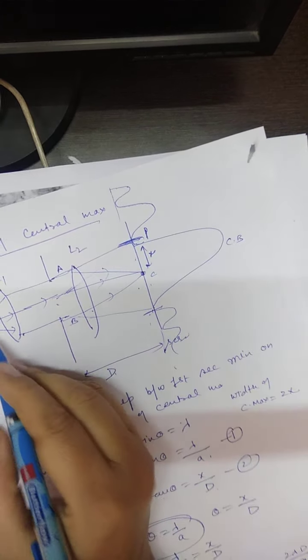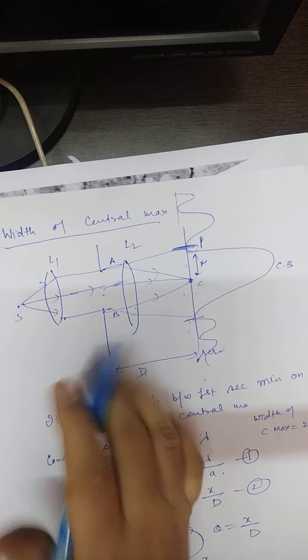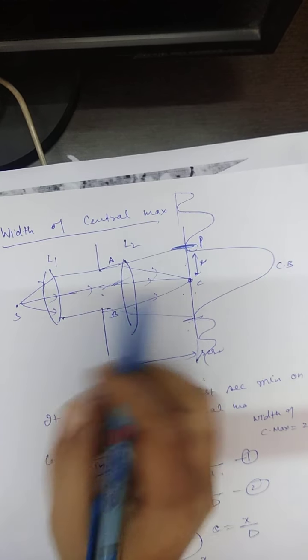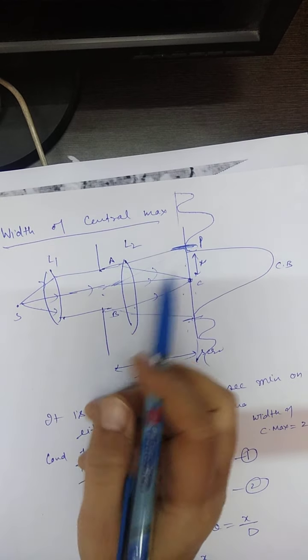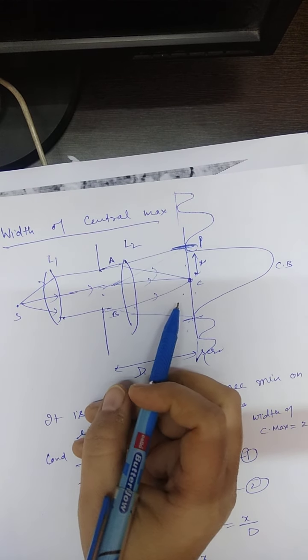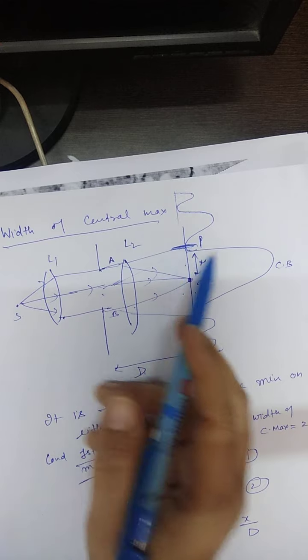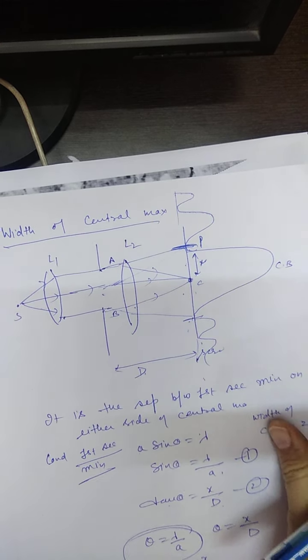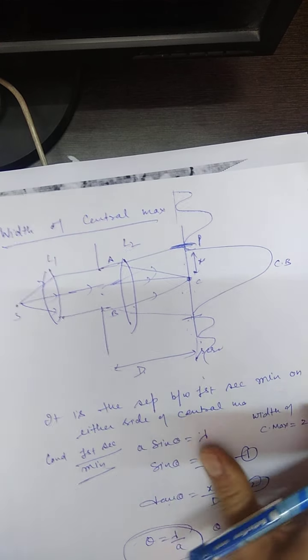If we replace the monochromatic source of light with white light, the central bright band is white in color and the remaining bands are colorful.